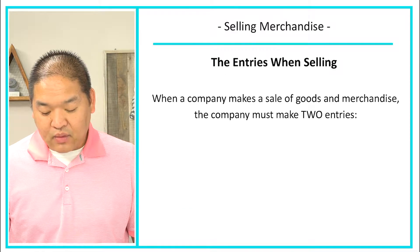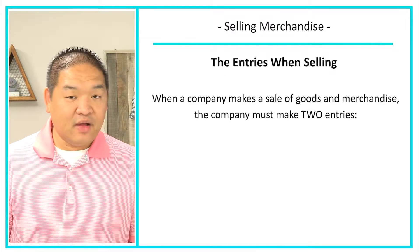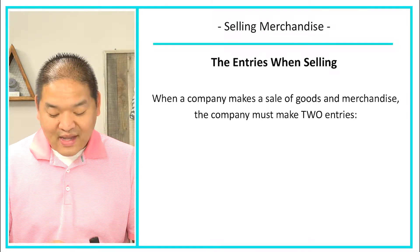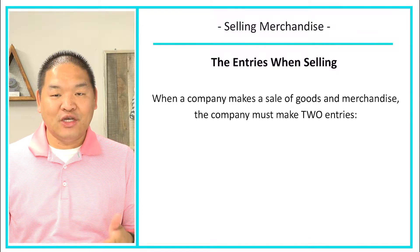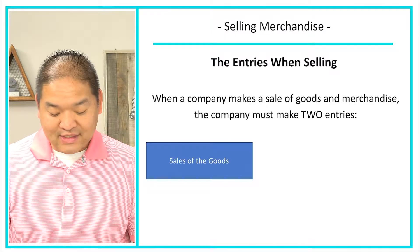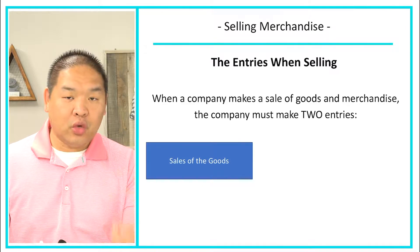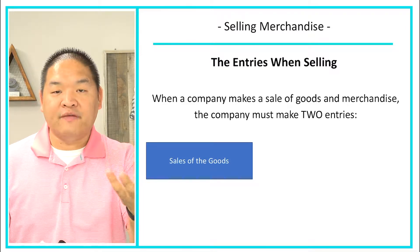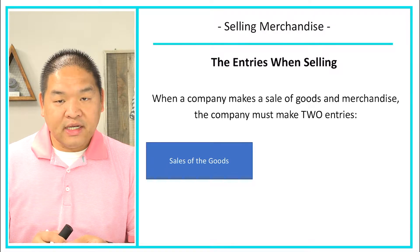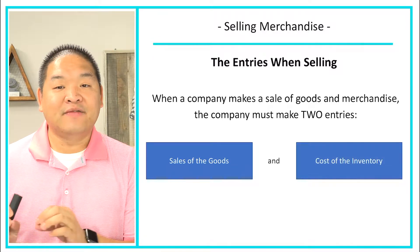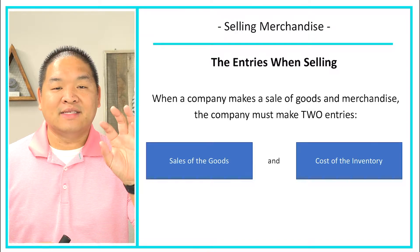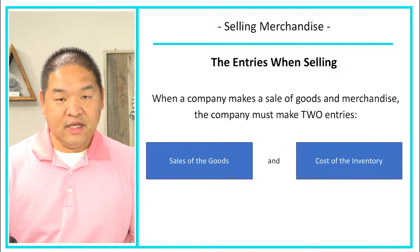When a company makes a sale of goods or merchandise, the company must make two entries. The first entry is the sale of the actual good — we sold this good for a profit, so we're going to report the sale at its gross amount. We also need to report the cost of the inventory. So we've got two entries: the sale and the cost of the inventory.